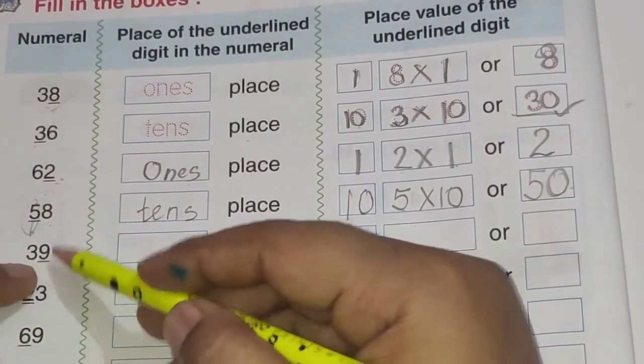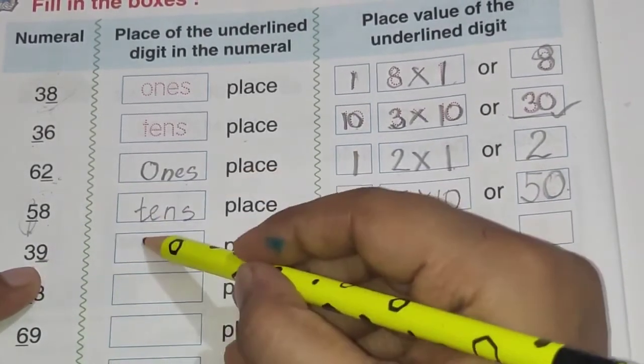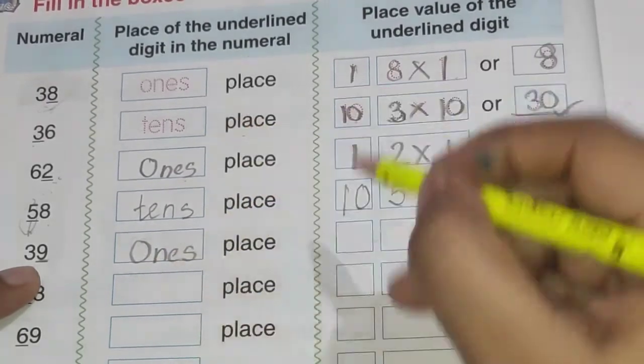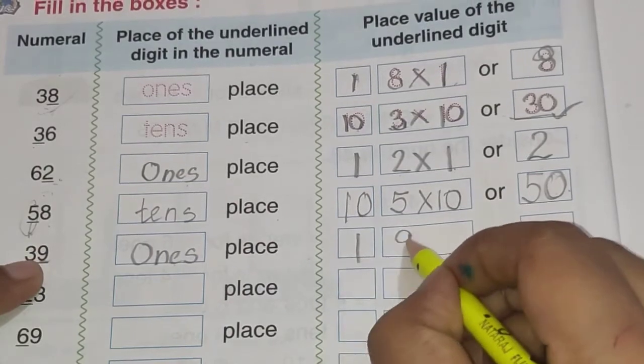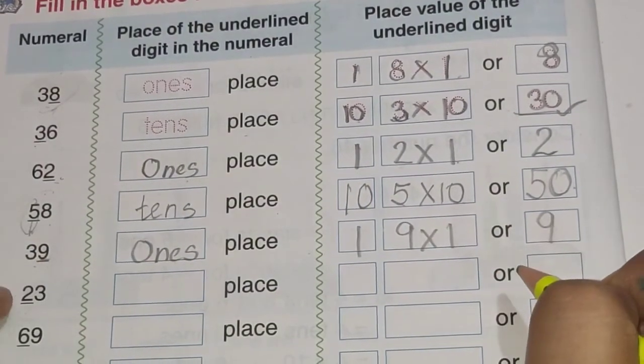Now then 39. 9 is underlined. So 9 is on which place? Ones place. O, N, E, S. Ones place. Ones place ki value hoti hai 1. And here we have 9. So 9 into 1. And it is 9 ones are 9.